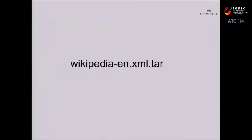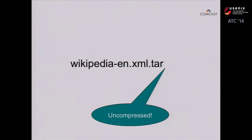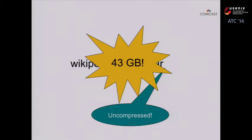Let's look at something a little bigger. If I were to take all of the English language Wikipedia articles, download them in XML format, which is not the world's most concise data format, and in fact not even compressed — so this is uncompressed XML — that's only 43 gigabytes. I can take my credit card and spin up an EC2 instance that has six times this RAM right now. And our reference data set that we were using is not even this big.